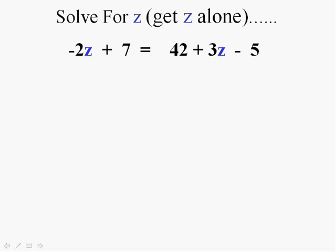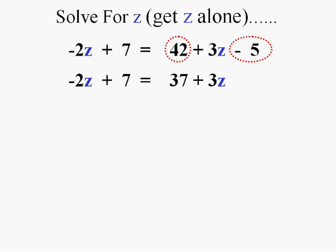How about this one? This one has two variables. We need to get the variable alone but we can't get both of them alone. So what we do here is combine them. When two things are on the same side of the equal sign, you can just put them together. But when two things are on different sides, you can't put them together. So we have to kill one of them.